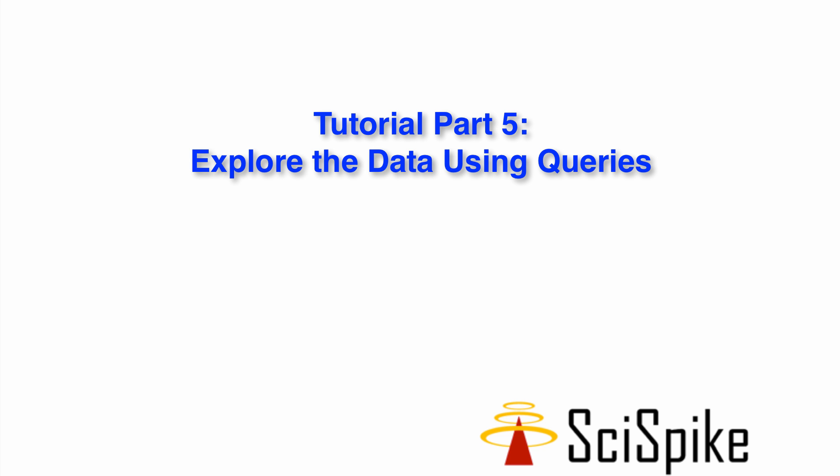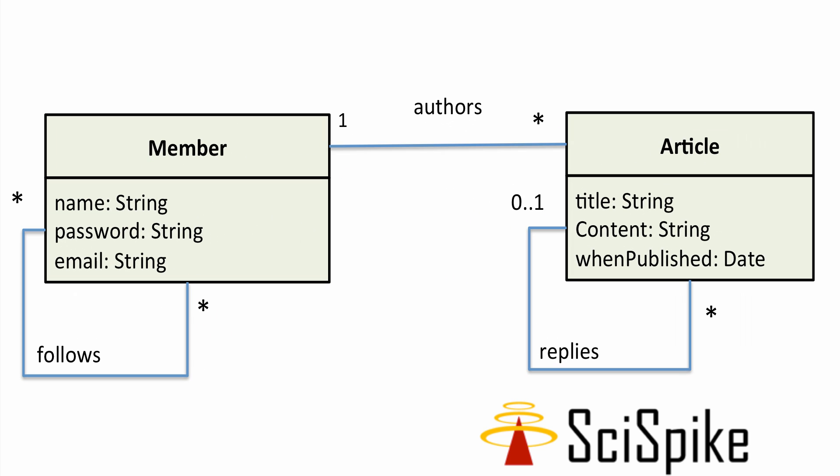In this fifth tutorial on how to use OrientDB, we're going to explore how to query data. We'll do some simple and some more complex queries. It is important that you have the model in front of you to understand the queries I'm creating. It's in the blog post if you want to see it there, but all the queries are over this model.